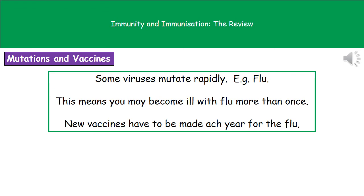Some pathogens are not so easy to deal with through vaccination programs, and that's because some viruses are able to mutate very rapidly. A really good example of this is the flu. Just because you've had the flu once doesn't mean you won't get it again, because it may mutate into a different type. That's why every single year when they offer the flu vaccine, they've generated a new vaccine based on the most likely types of flu around that particular year.